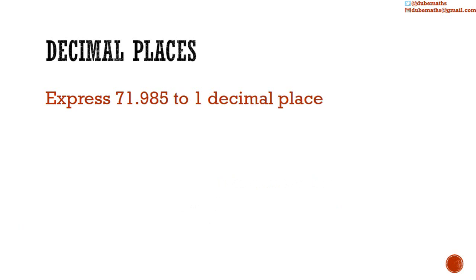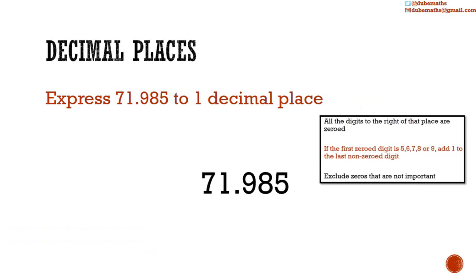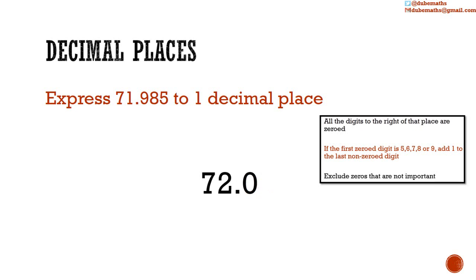In the third example, we have 71.985 and we want to express it to one decimal place. All the digits to the right of the first decimal place are zeroed. The first digit eliminated was an 8, which is 5 or greater, so we add 1 to the 9. We exclude all zeros to the right of the first decimal place, ending up with 72.0. So 71.985 expressed to one decimal place is 72.0.